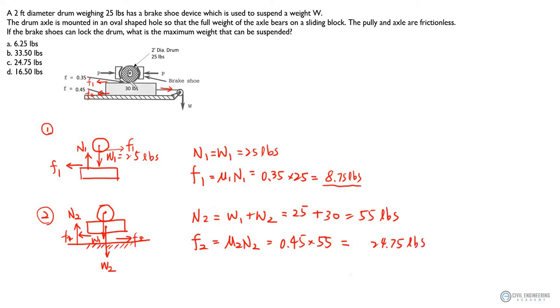The weight will be suspended from these two frictions along the horizontal direction. This block will have two frictions, F1 and F2, preventing this weight from moving. So W equals F1 plus F2, which is 8.75 plus 24.75, giving you 33.5 pounds.